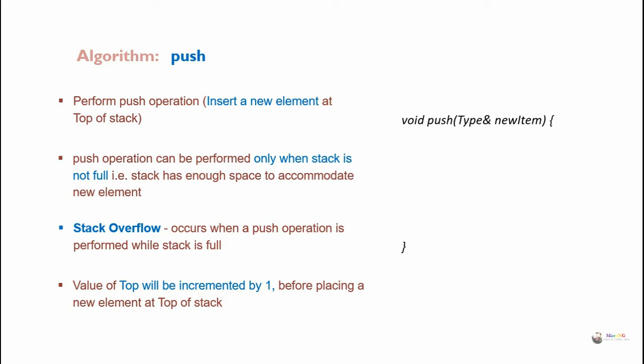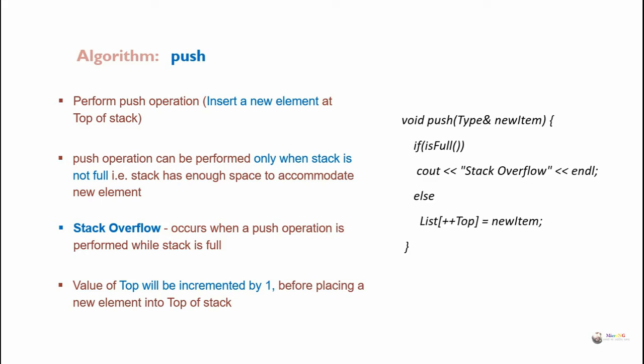During the push operation, first we check whether the stack is already full or not by calling isFull. If the stack is full, the condition is stack overflow. If the stack is not full, we increment the value of top by one — plus plus top — and the new item will be added at the new top position. So first top is increased by one, and the item gets stored at the new top location.